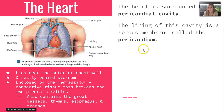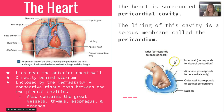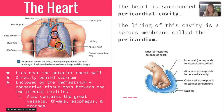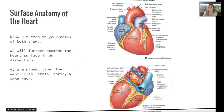The heart is surrounded by the pericardial cavity. The lining of that cavity is a serous membrane called the pericardium. It's easy to understand if you think of your fist being pushed into a balloon: the base of the heart is where your wrist would be, the apex is where your knuckles would be. The inner wall is the visceral pericardium, the outer wall is the parietal pericardium, and the space in between is the pericardial cavity protecting the heart.